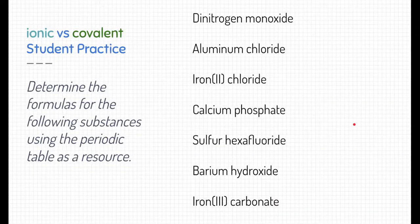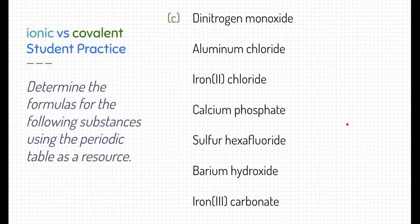Let's do some practice. The first example is dinitrogen monoxide. The first thing we need to do is determine whether it's ionic or covalent. This one is covalent because it's made of nitrogen and oxygen — both nonmetals — and the prefixes tell us how many there are. Di- means two, so there are two nitrogens, and mono means one, so there is one oxygen — giving us N2O.